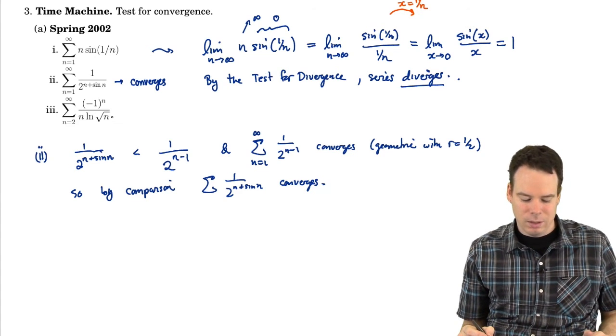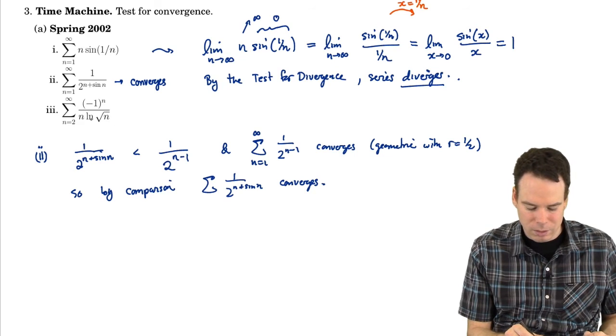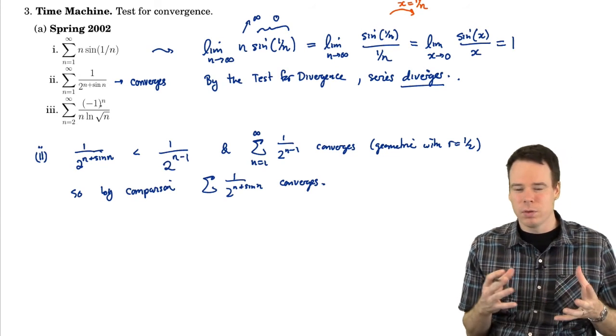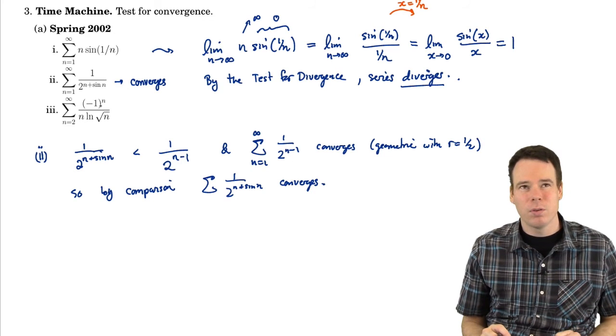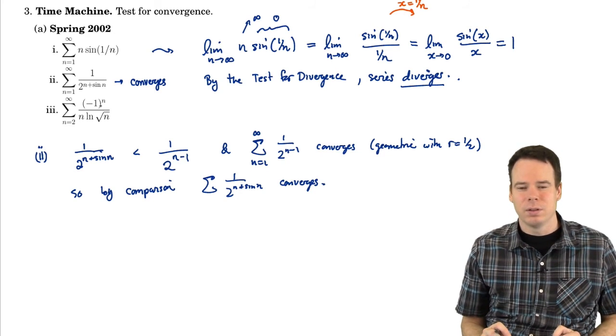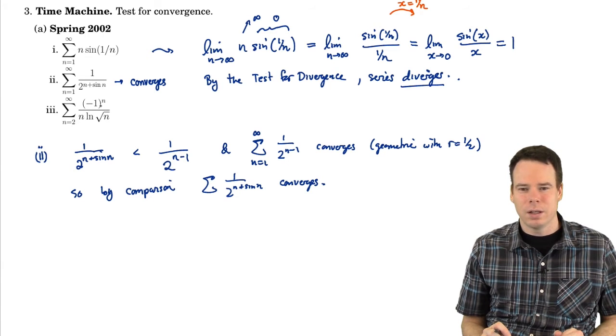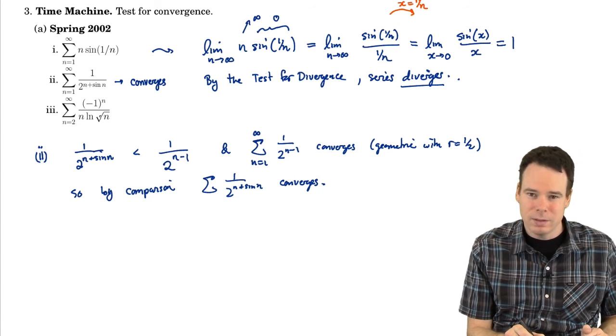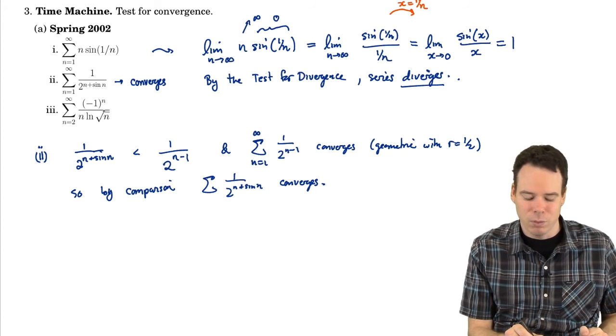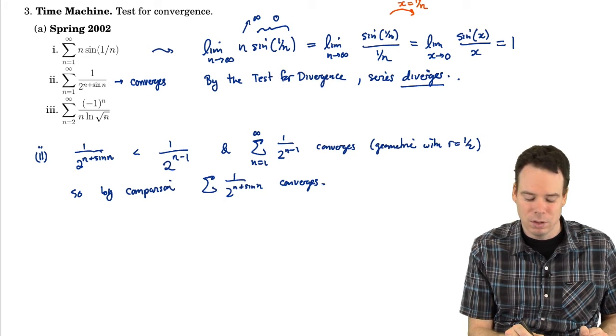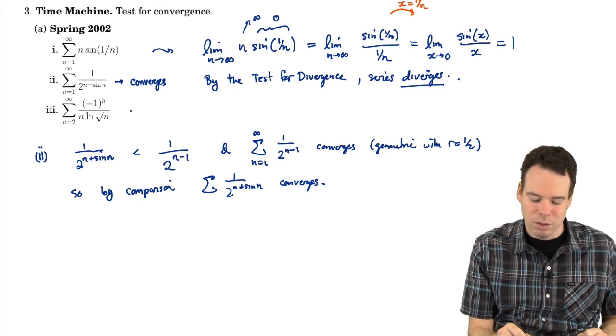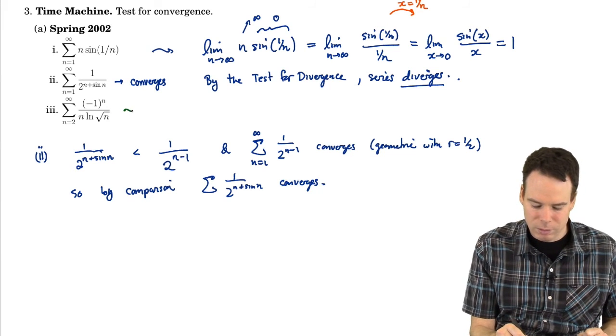Well, absolute convergence said I would have to look at the corresponding series 1 over n log square root of n. And that, well, log of square root of n is the same as 1 half log n. So this is really like a 1 over n log n series. I remember that from the integral test section. 1 over n log n diverged. So this doesn't seem to be absolutely convergent, because I can sort of fiddle around with it and make it kind of look like a 1 over n log n series, which diverges. So I don't think this is absolutely convergent, but it could conditionally converge.